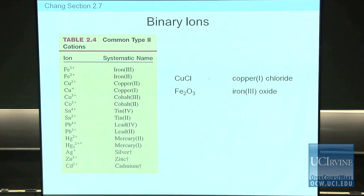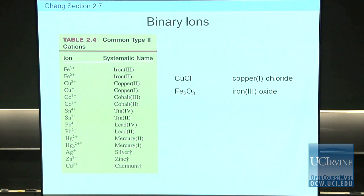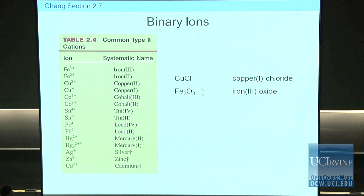Here's an example: this is copper(I) chloride. If I called this just 'copper chloride,' I'd be making a mistake, because I have to specify the oxidation state — copper is a Type 2 metal. Copper(II) chloride would have a different formula: copper with two chlorine anions. This is iron(III) oxide. How do you know it's 3 and not 2? Because there are three oxide anions — oxide is always 2−, three of them means six negative charges total — so two iron cations each need a 3+ charge.